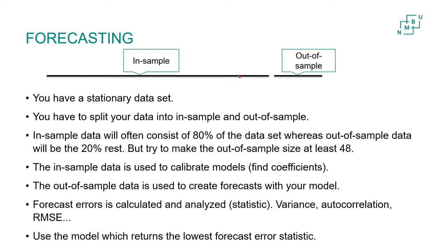Even if you get a very high fit in-sample, you will often get a lower fit when you use the model for forecasting. This kind of overfitting can be a problem. That's why it's really important to split your data into an in-sample and an out-of-sample partition. Make sure the out-of-sample partition has at least 48 observations; otherwise you can't make reliable inferences.